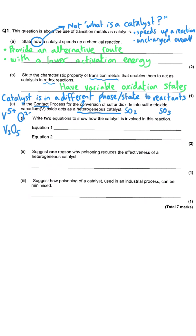What's going to happen in this catalysis is we start with SO₂, the reaction being catalysed, and the catalyst V₂O₅ is a reactant in equation one. A catalyst doesn't get used up in the course of a reaction — it may look like it's used up in equation one, but in equation two it gets regenerated as V₂O₅. We started with V₂O₅ and finished with V₂O₅, therefore it has behaved as a catalyst.